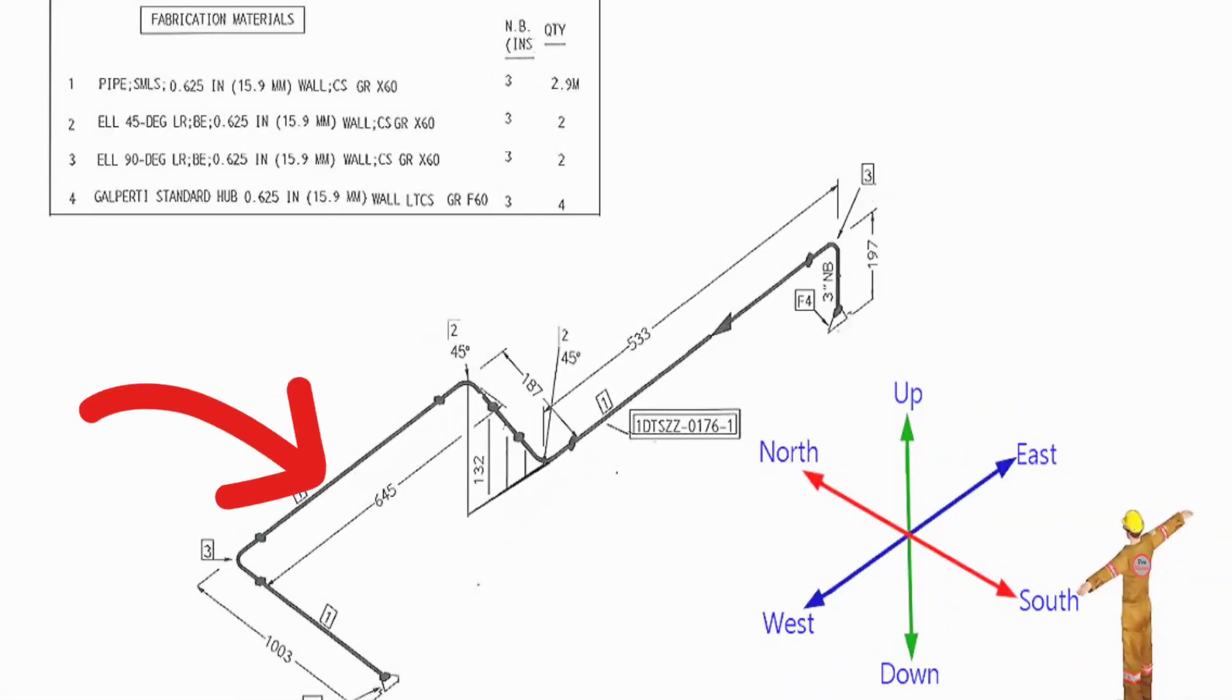This is the pipe isometric drawing. This pipeline consists of one spool only. This is the list of materials for fabrication which used in this pipeline. Let's learn the materials on this pipe drawing.